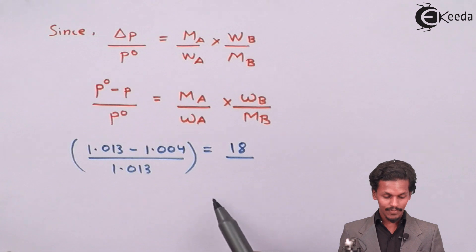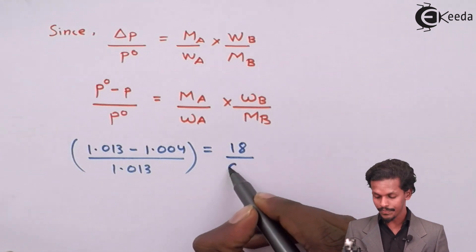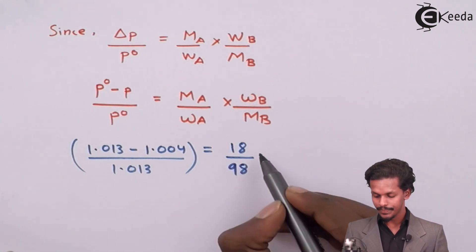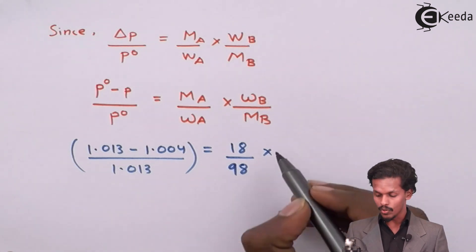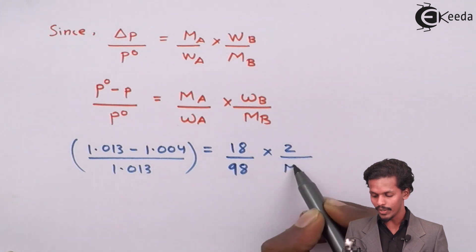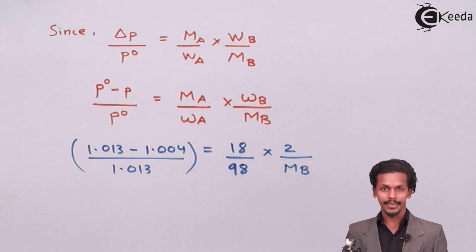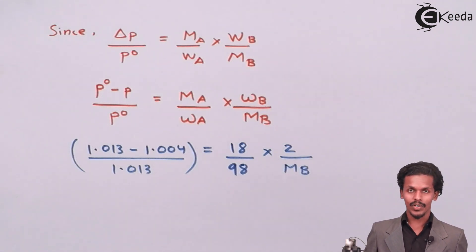While the WA value which is given to us is 98, into WB value that we have got was 2 gram. And now we have to calculate what is MB. Now let us calculate what is MB.